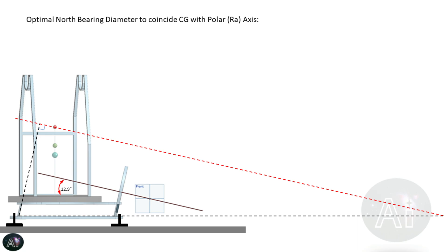Now let's assume that we want to design the equatorial platform when the RA axis is exactly coinciding with the original center of gravity, which is this red dot.